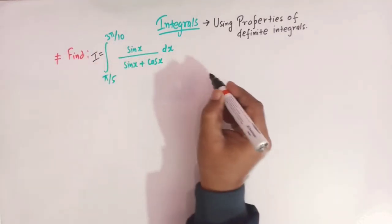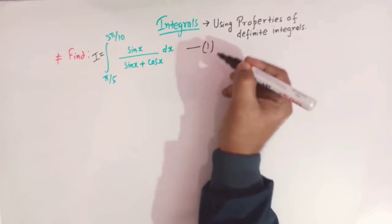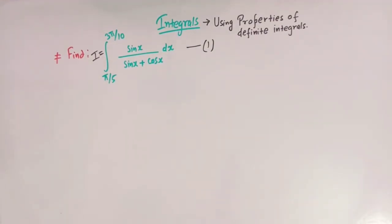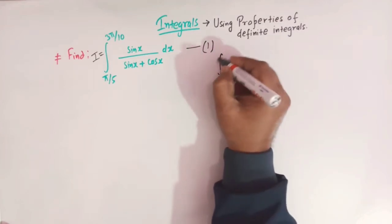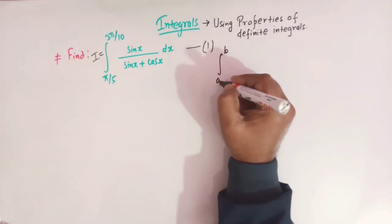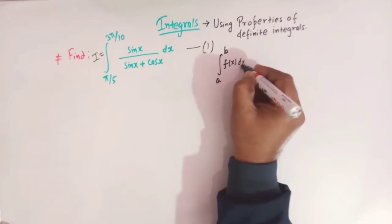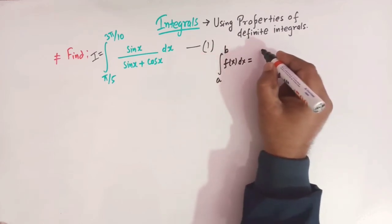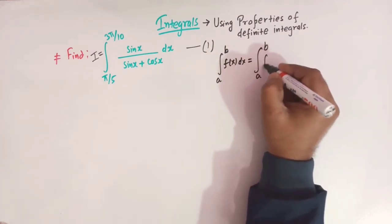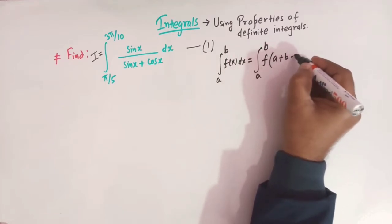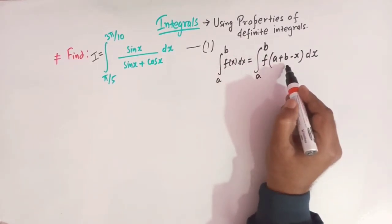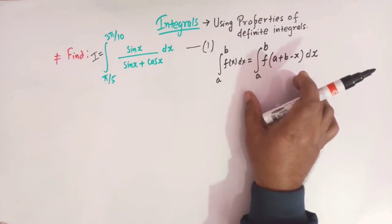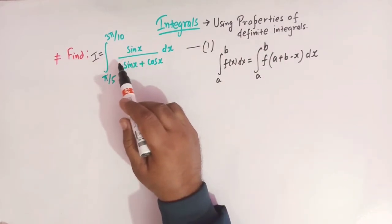Let us first call this integral as I — integral number 1. We are going to use this property: if we have a definite integral from a to b of f(x) dx, then this integral is equivalent to the integral from a to b of f(a + b - x) dx.